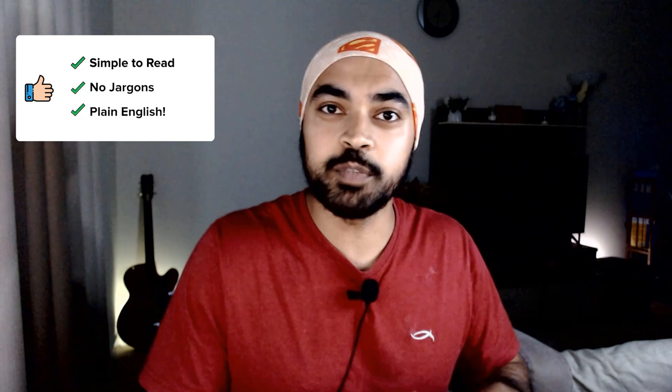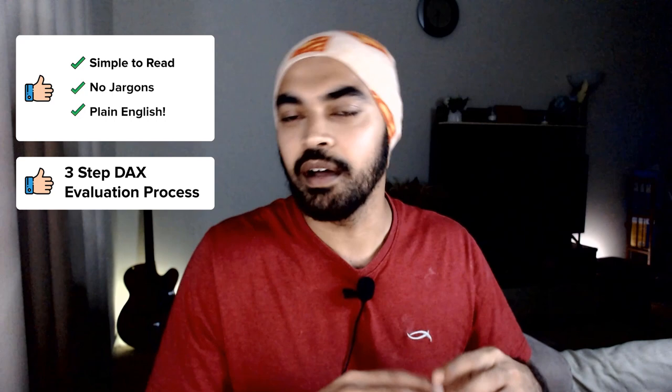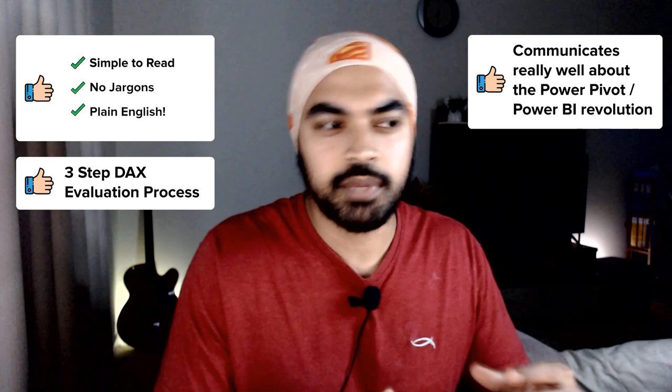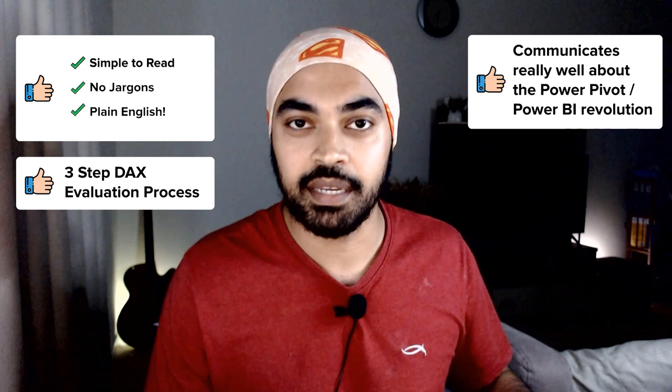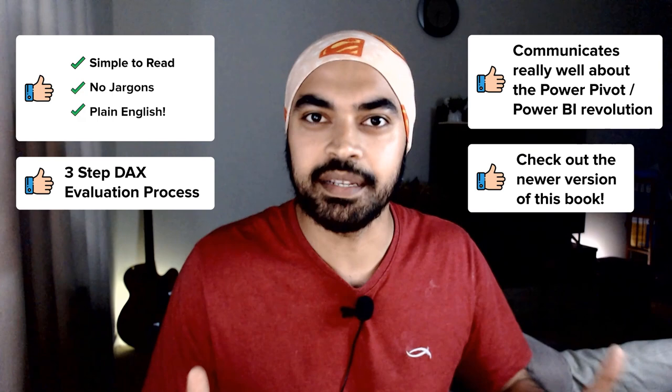Rob uses very simple language to explain complex DAX formulas throughout the book. One thing that has stayed with me to this date is the three-stage DAX evaluation process — essentially what's happening under the hood of the DAX engine — which he explains in this book. That was really enlightening. The other thing I really liked is that the book doesn't just speak about DAX per se; it also gives you some marketing content as to why Power Pivot is the next big thing, which you can use to communicate to clients or make a case when seeking a job.